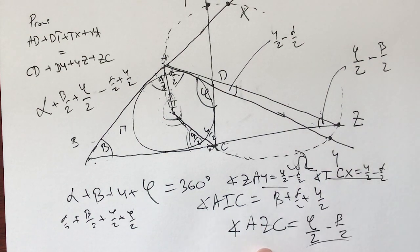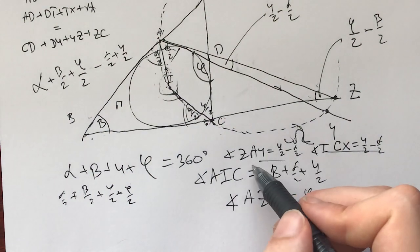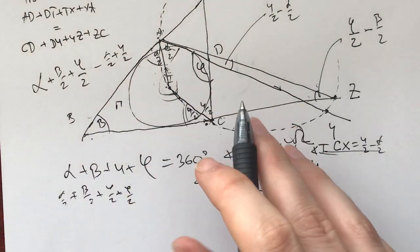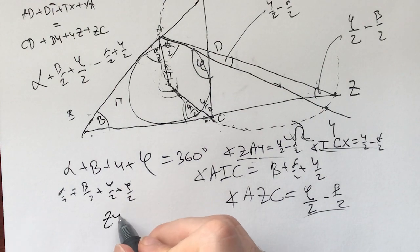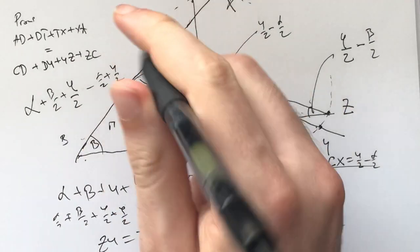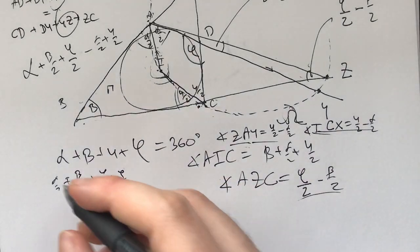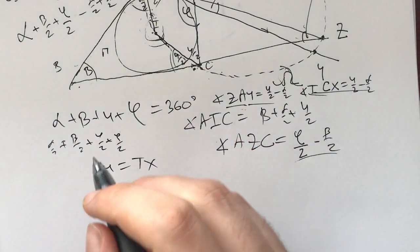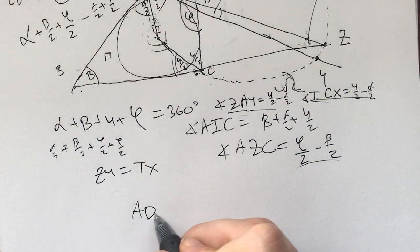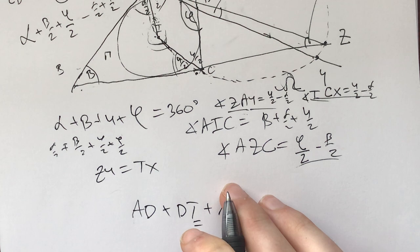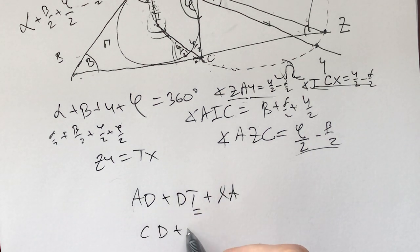It's like that because it happens that gamma is greater than alpha. And with that, in a similar way, we know that ZAY is equal to gamma half minus alpha half. And in the same way, we will get that the angle TCX is equal to gamma half minus alpha half. And now what does this give us? Because they are on the same circle and the chords have the same angles, that means ZY is equal to TX.